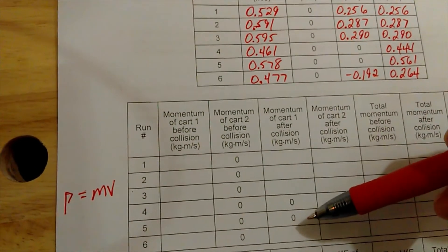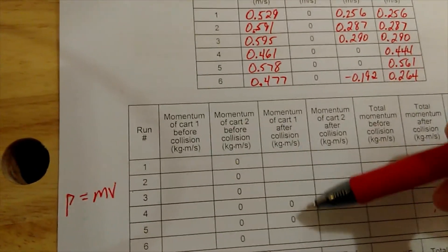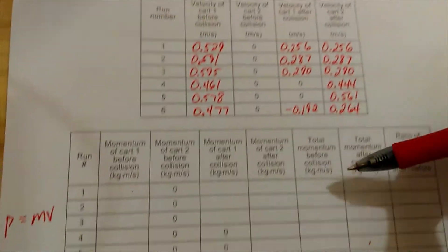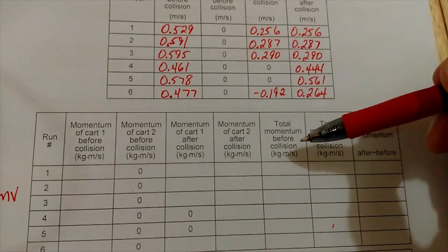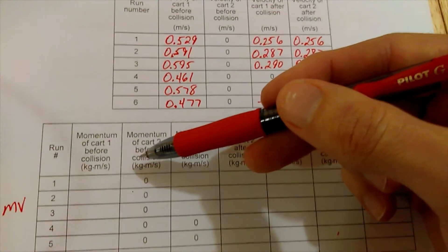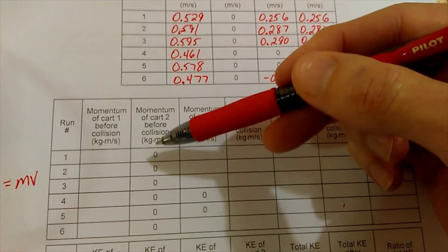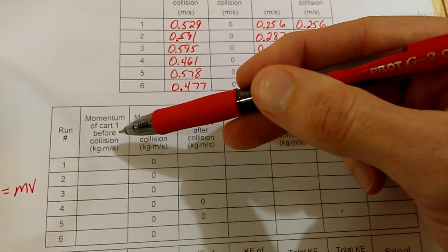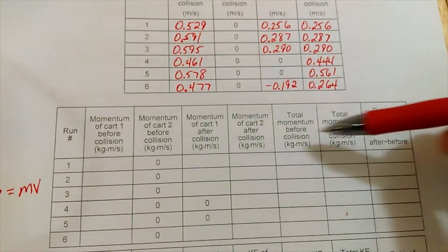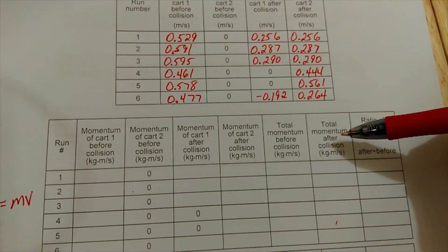You've got some zeros filled in where car one stopped after the collision, so it had no momentum. You want the total momentum before the collision, so add these two columns together. That's easy because this whole column is zero, so the total momentum before is just number one's momentum.